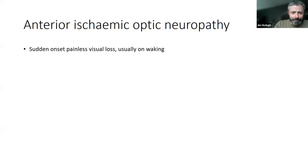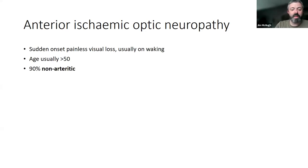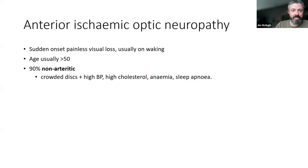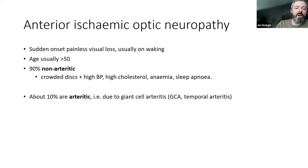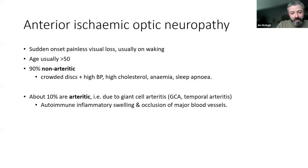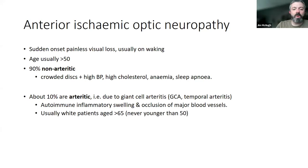Anterior ischaemic optic neuropathy — very common. Characteristic history of sudden visual loss, usually waking up with it. It affects older people as a rule. The great majority are non-arteritic, caused by a combination of small optic nerves that readily lose their blood supply combined with furred-up arteries, high blood pressure, high cholesterol, anaemia, and sleep apnoea. Only about 10% are due to temporal arteritis, but that's the one we worry about because it is arguably the worst condition in ophthalmology — from no symptoms at all to complete irreparable blindness in both eyes can be measured in hours to a few days.